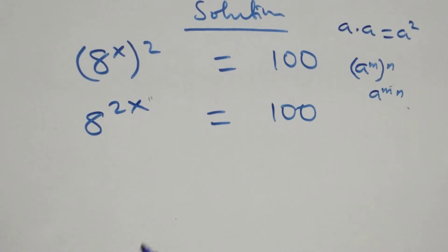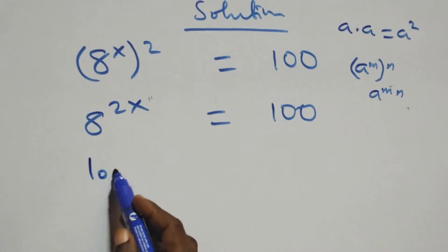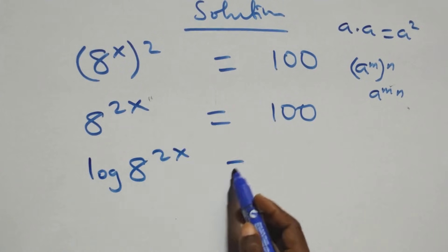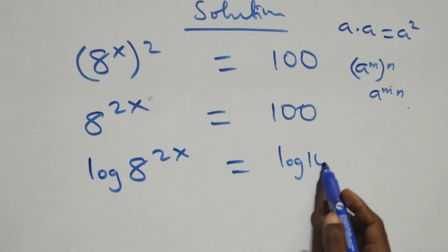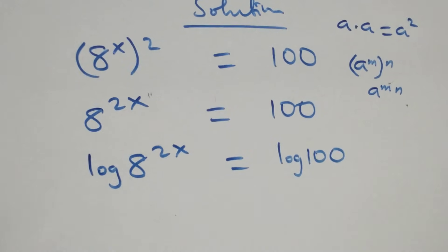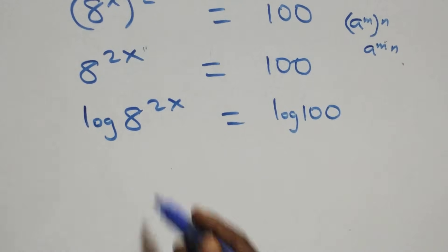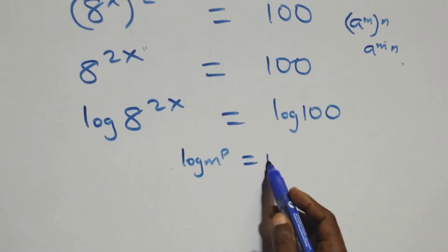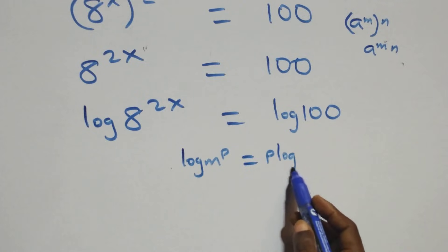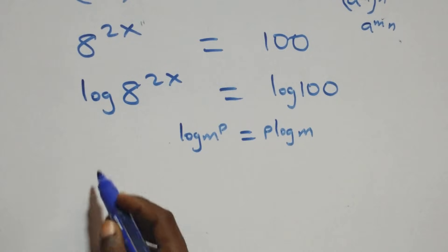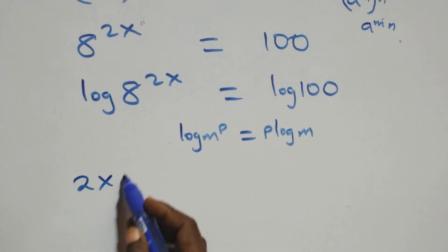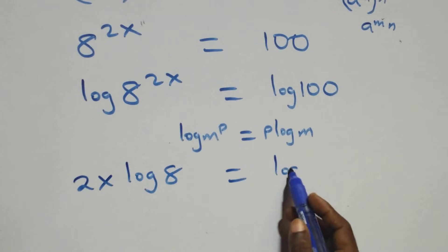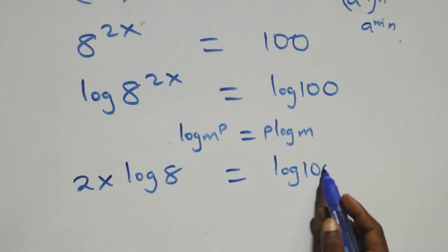The next step is to take the log of both sides, giving us log of 8 raised to power 2x equals log 100. This follows the logarithm power rule: log of n raised to power p equals p times log n. So this becomes 2x times log 8 equals log 100.